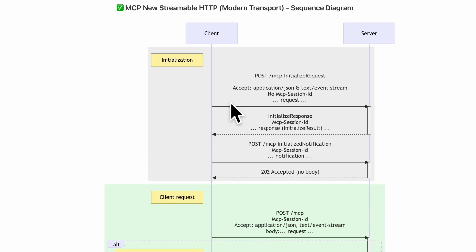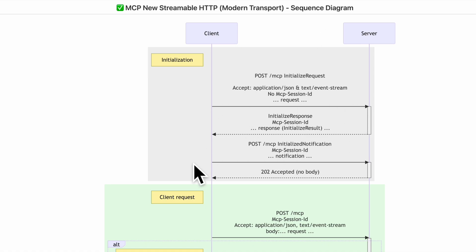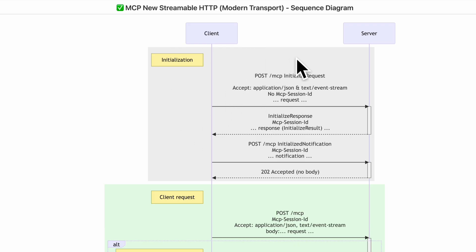This sequence diagram shows two participants — the client and the server — and the interactions between them over the entire life cycle. As we go down we see life cycle events like initialization, client requests, and so on. The client initiates communication by sending requests and notifications; the server responds, sends back data, manages ongoing communication, and may also initiate requests for additional data. Streamable HTTP enables this continuous communication through three mechanisms: HTTP POST requests, GET requests, and Server-Sent Event streams.